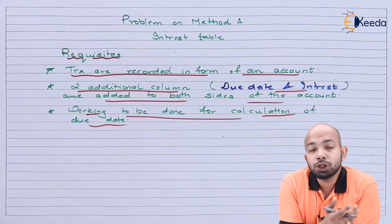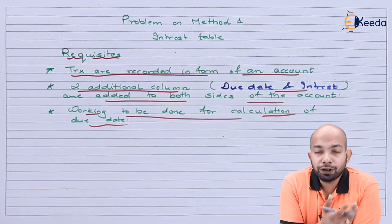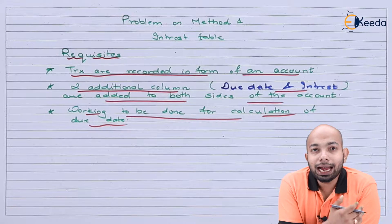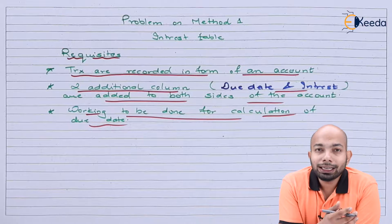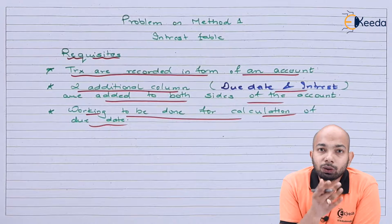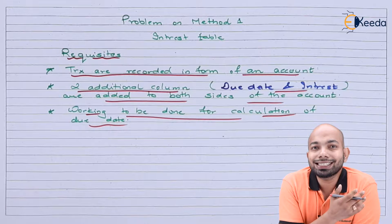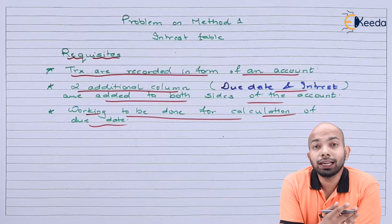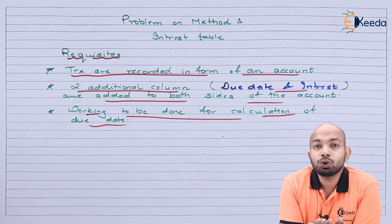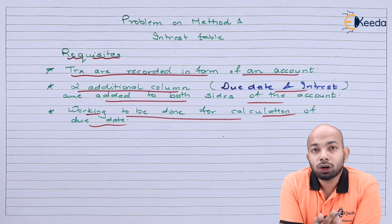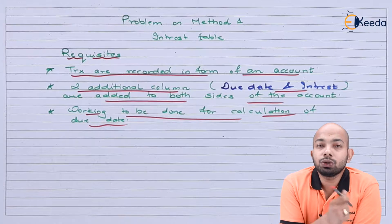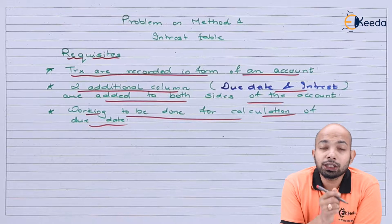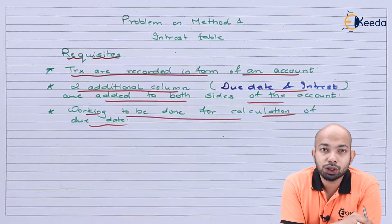Working has to be shown to figure out how the due date has been calculated, and from that you will figure out how the transaction is getting resolved. How to do that can be explained using a problem or illustration, so let's jot down the illustration now.